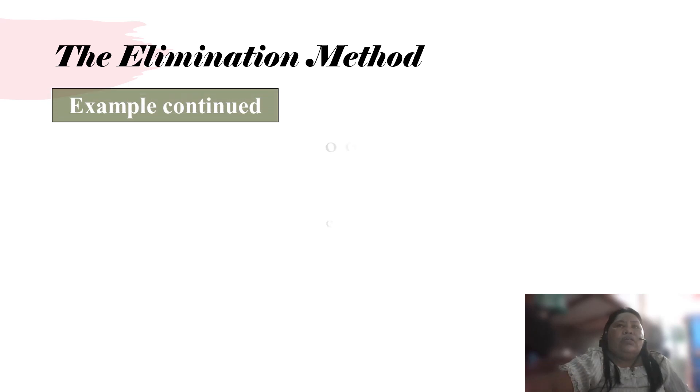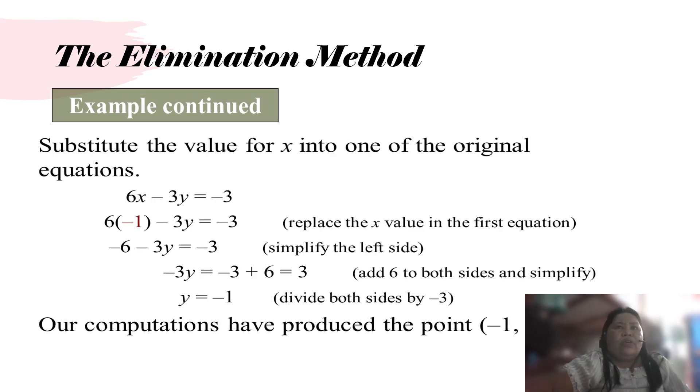Then substitute the value of x into one of the original equations. So from 6x minus 3y equals negative 3, our x is negative 1. So 6 times negative 1 is negative 6, and then bring down negative 3y. So it equals negative 3.